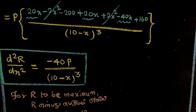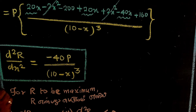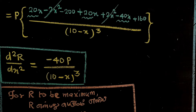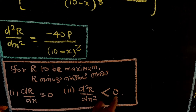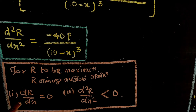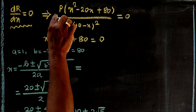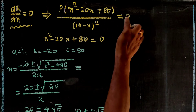For receipts R to be maximum, two conditions must hold: first, dR/dx equals 0; second, d²R/dx² must be less than 0. Setting dR/dx equal to 0: p times (x² minus 20x plus 80) divided by (10 minus x)² equals 0, which gives x² minus 20x plus 80 equals 0.